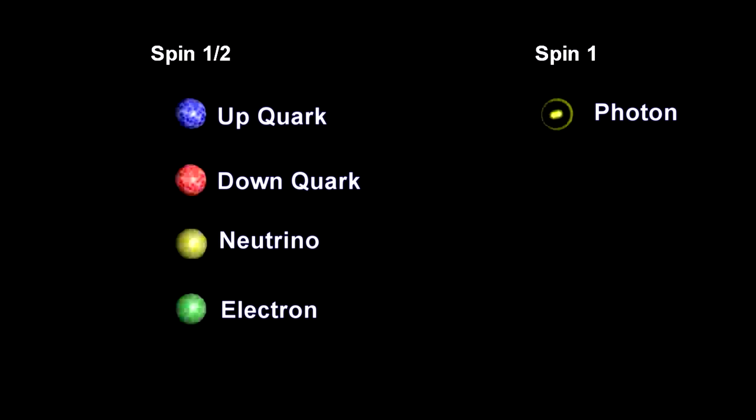The statistics that describe spin one-half particle behavior in large groups was developed by Enrico Fermi and Paul Dirac. They are called fermions, after Mr. Fermi.